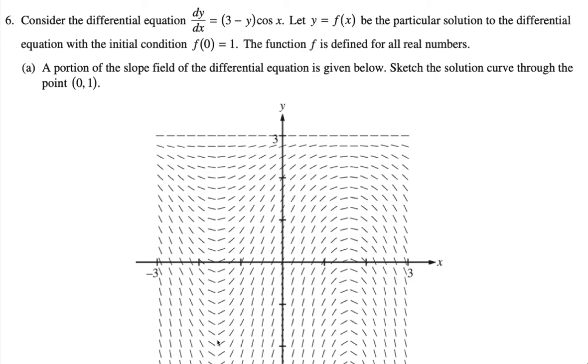2014 number 6. So here we have the differential equation dy/dx equals (3 minus y) times cosine of x.